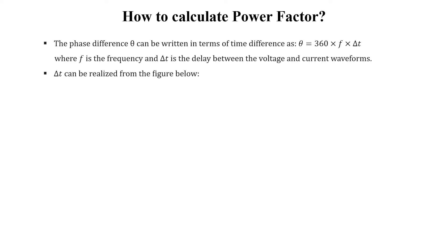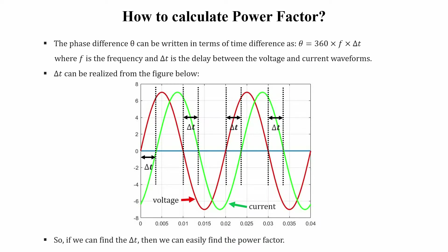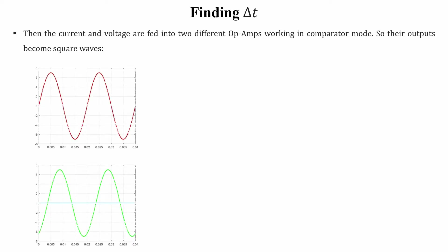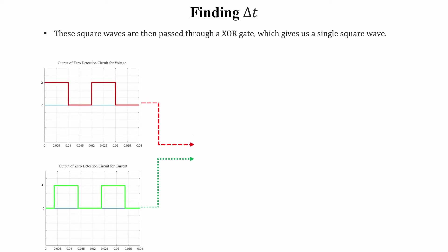Delta t can be realized from a figure where the red waveform shows the voltage and the green waveform is the current. Delta t is the time difference between them. To find delta t, we look at the voltage and current waveforms separately, then feed these two waveforms into two different op-amps working in comparator mode. They convert the sinusoidal waveforms into square waveforms. Current and voltage are fed into the op-amps by a current transformer and potential transformer respectively. This op-amp setup is known as the zero detection circuit, since it helps to find the zero crossing of the input signal.